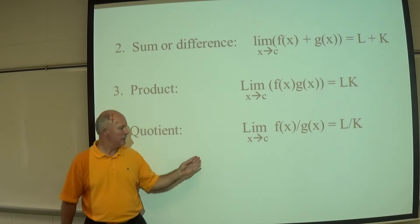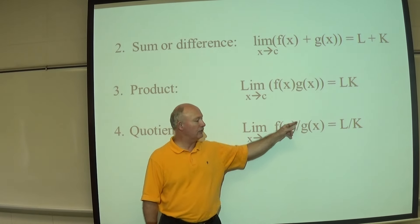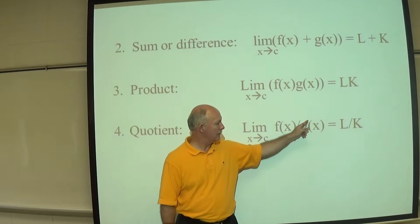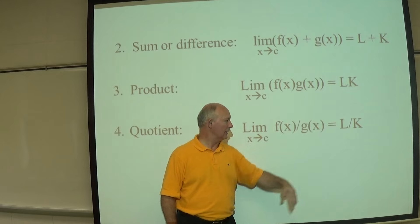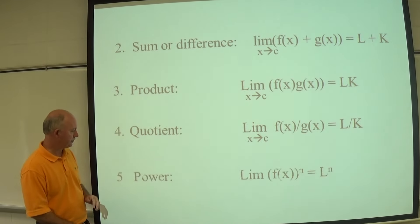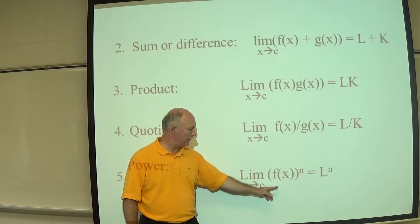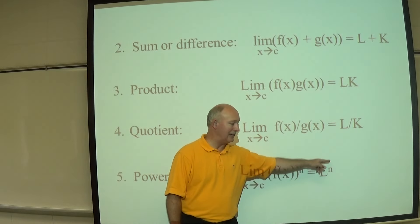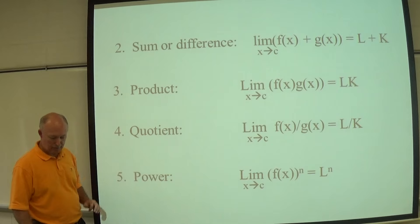The quotient property: the limit as X approaches C of F of X divided by G of X equals L divided by K — the limit of the numerator divided by the limit of the denominator. The power rule: the limit as X approaches C of F of X to the N equals L to the N power.